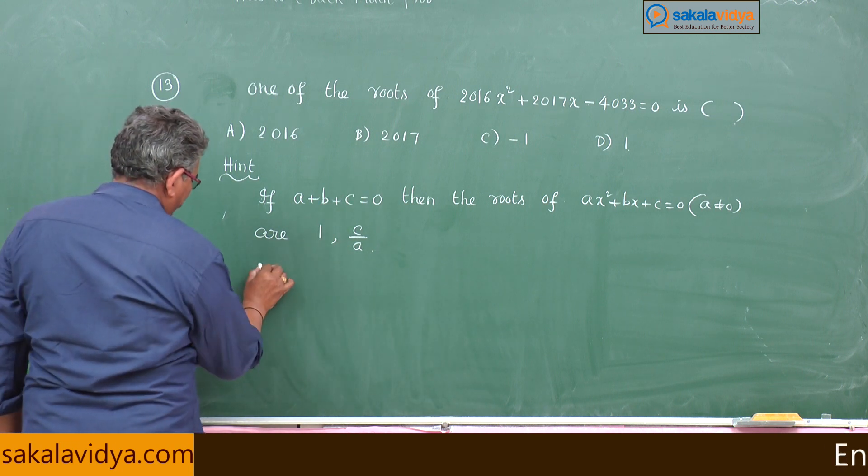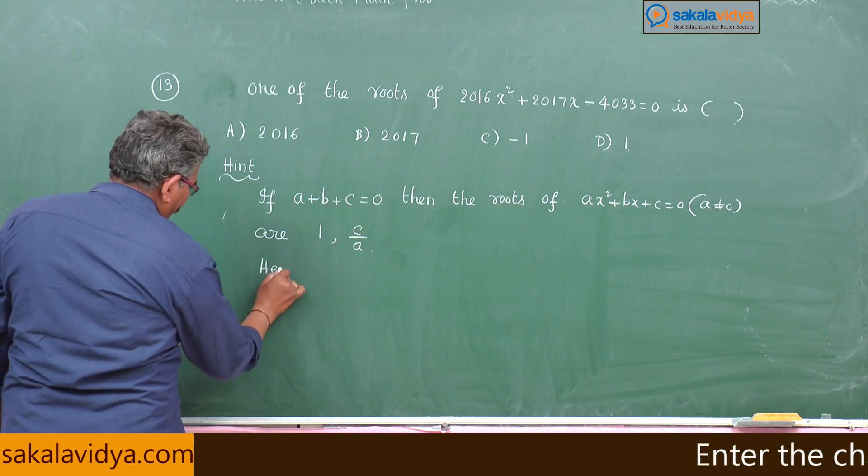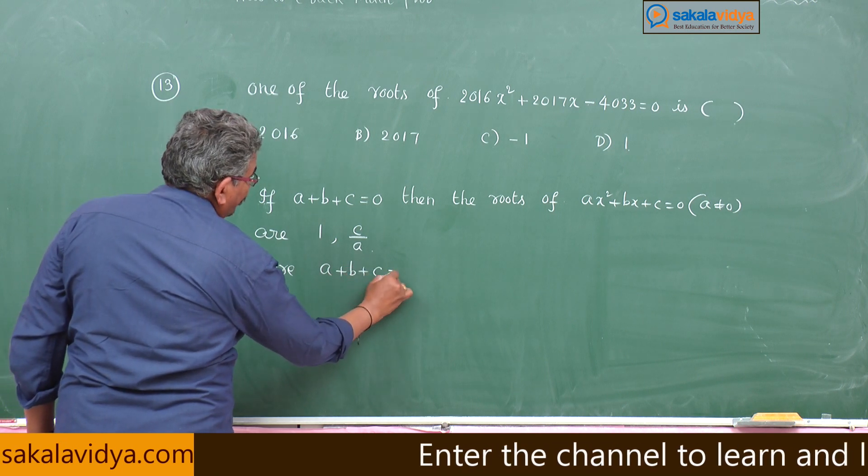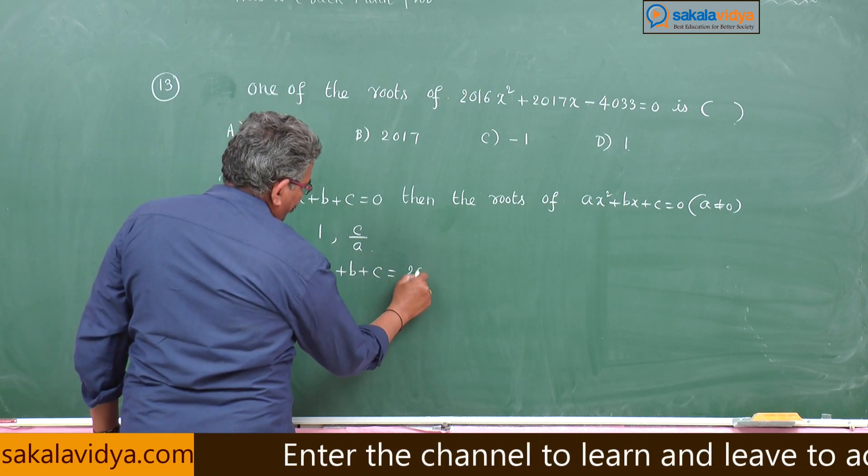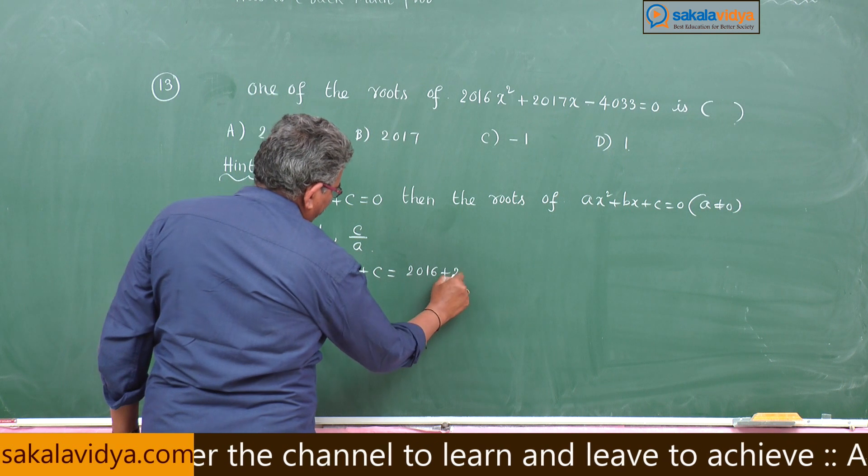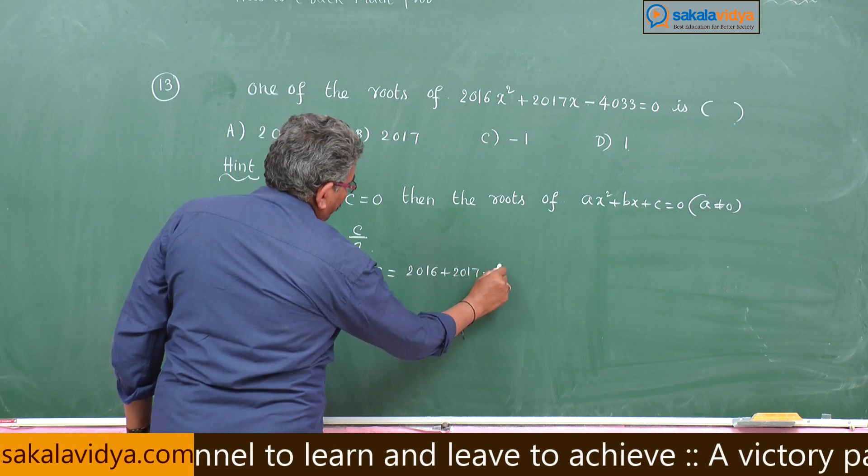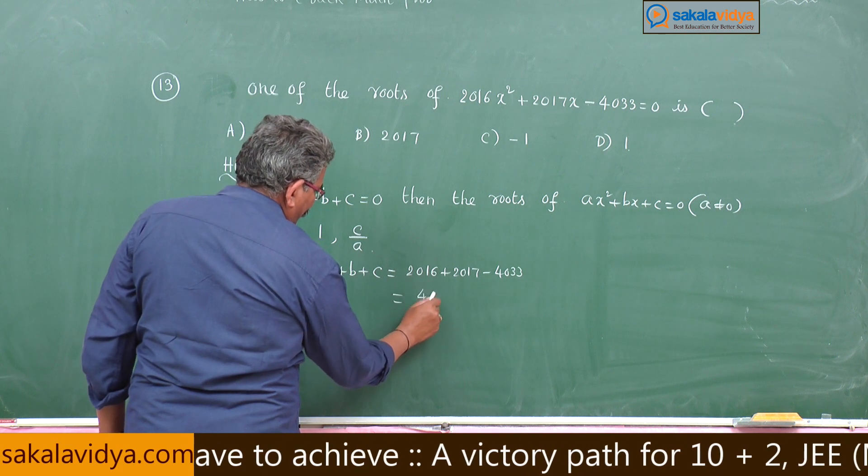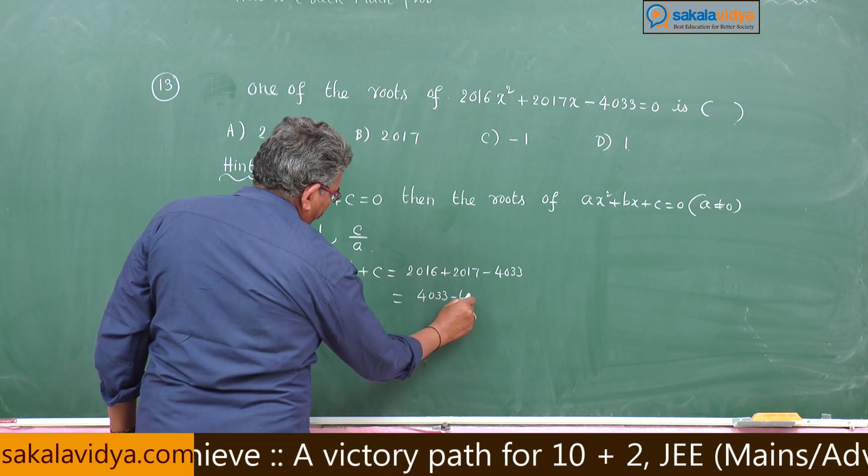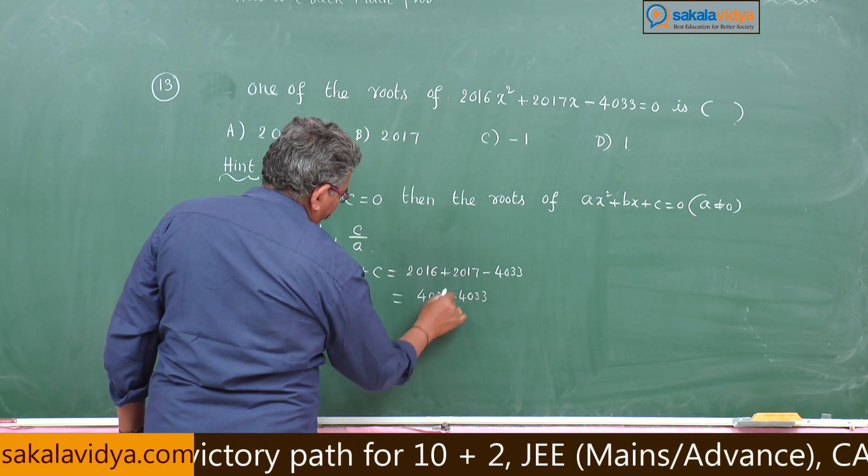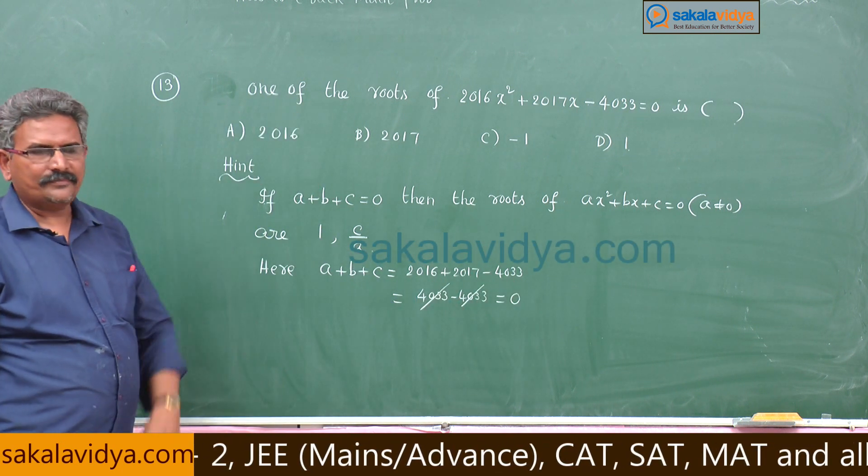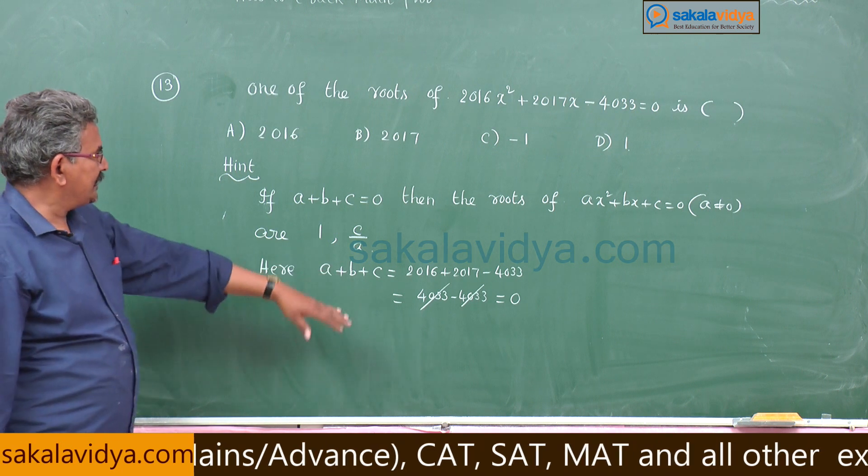Therefore according to the problem here, let us check. A plus b plus c: 2016 plus 2017 minus 4033, this is 4033 minus 4033 is cancelled, we get 0. Am I correct? So as it satisfied.